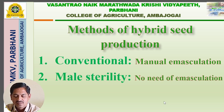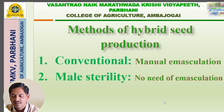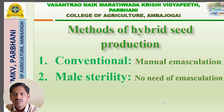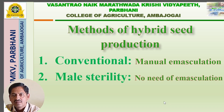What are the methods used for the production of hybrid seed? Generally two methods are there: one is the conventional method and another one is male sterility. In the case of the conventional method, you have to emasculate the flowers manually so that self-pollination is prevented. But on a larger scale, the manual emasculation is not easy — it's a very tedious job.